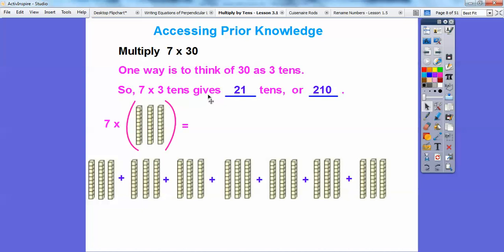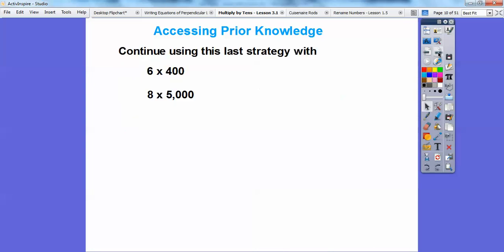So what I like to do is do 7 times 3 is 21 and add how many zeros? So 21 with a zero right there. Let's continue using that strategy with 6 times 400 and 8 times 5,000. So 6 times 4 is 24, and then if I add 2 zeros I get 2,400. So there's my 6 times 4 is 24, and then there's the 2 zeros right there. 8 times 5 is 40, and then I carry the 3 zeros. So it's 40,000 right there.